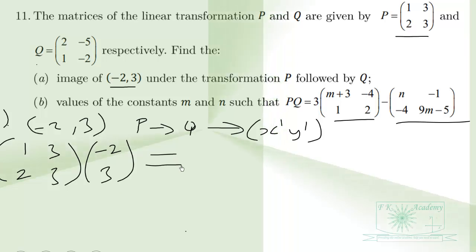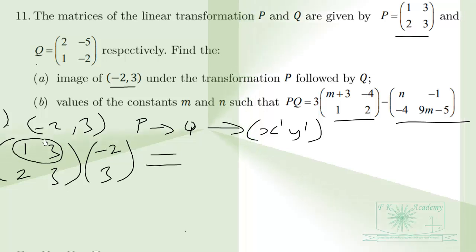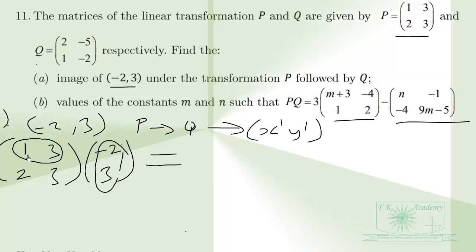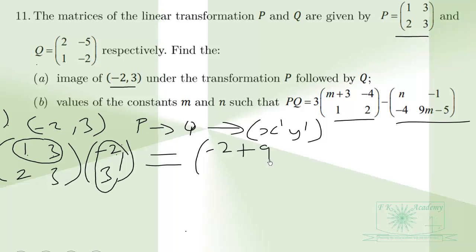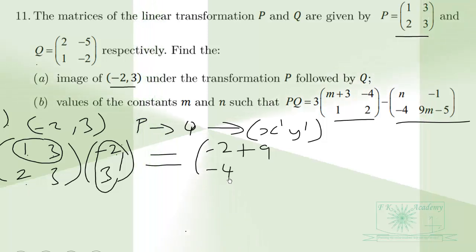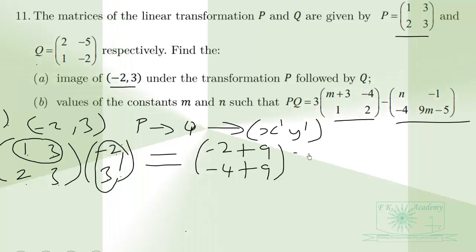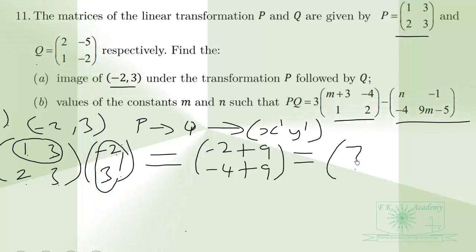Recall that we multiply row by column. So 1 times -2 gives -2, and 3 times 3 gives 9; that row gives 7. Then 2 times -2 gives -4, and 3 times 3 gives 9; that row gives 5. When we simplify this we obtain [7, 5].